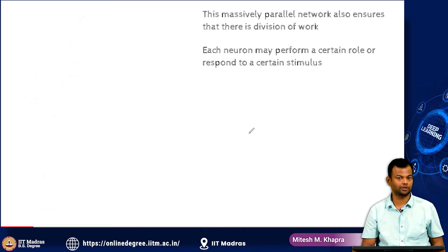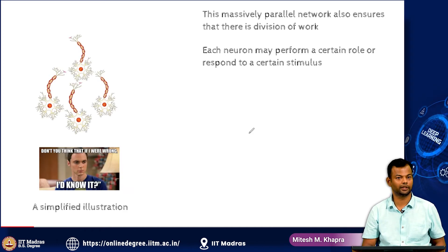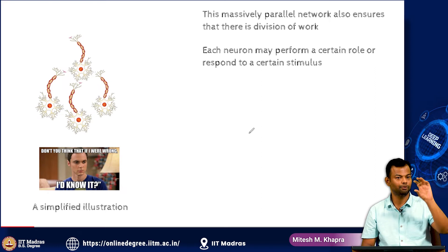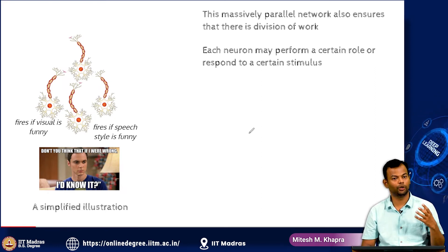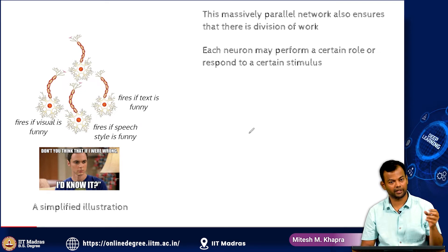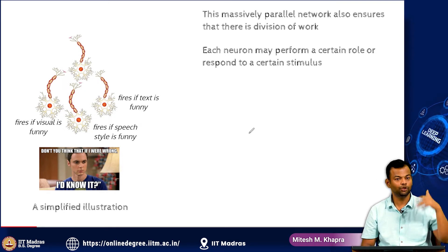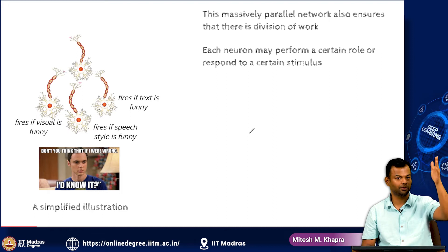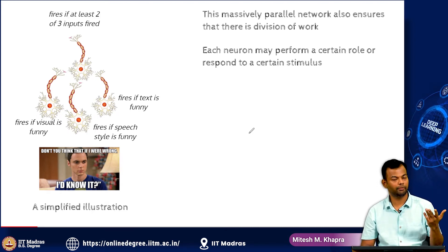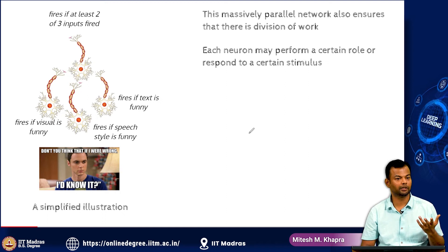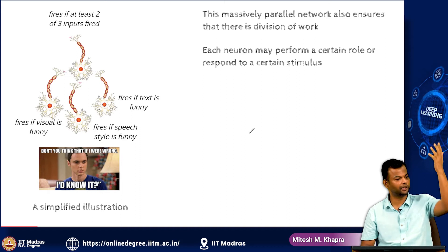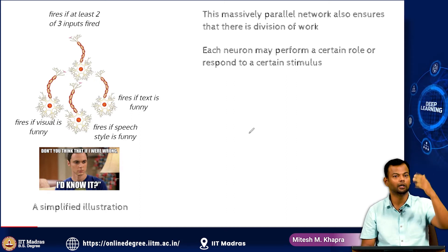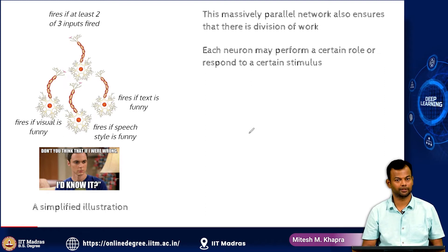To illustrate this division of work: you might have one neuron which fires only if the visual is funny. There might be another neuron which fires only if the speech or sound is funny. And another neuron which might fire if the text — whatever is being said — is funny. These three neurons might then pass information to a fourth neuron, and that neuron might fire if at least two of the three inputs are activated. If two of the three inputs are on, that is enough for it to fire, and it in turn would do some other action — either activating other neurons or directly being responsible for some action.